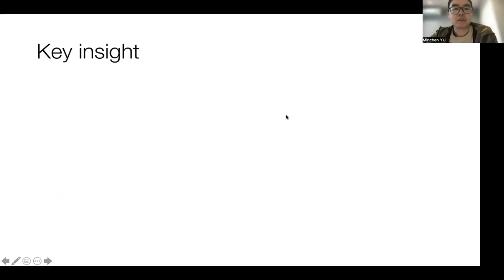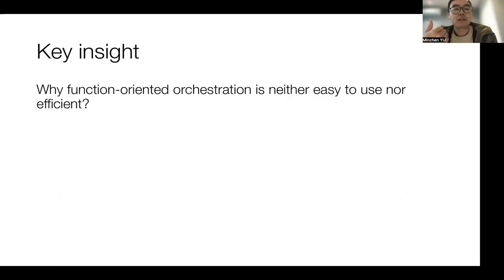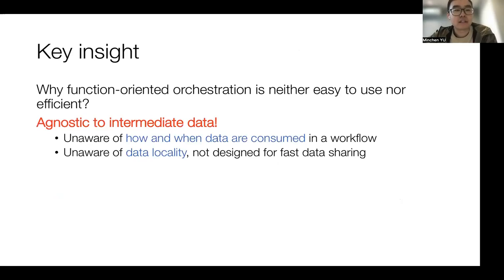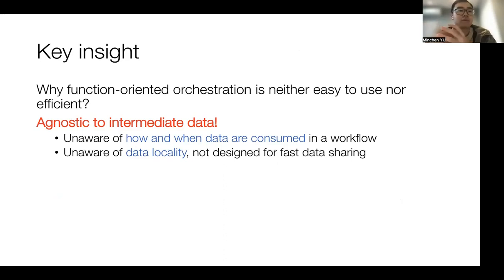To achieve these three goals, we are asking why current function orchestration is neither easy to use nor efficient. Our answer is that it is agnostic to intermediate data. First, because it is unaware of how and when the data should be consumed in the workflow, it cannot allow developers to express fine-grained data exchange patterns. Also, it is unaware of data locality and is not designed for fast data sharing.